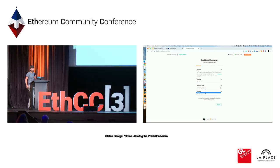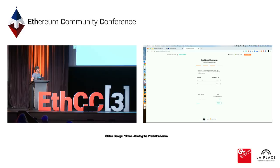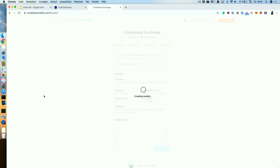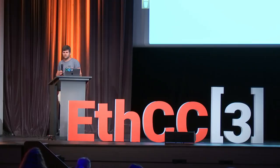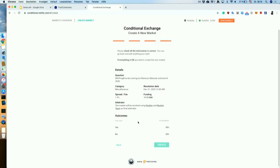Then I can select the collateral token in which the market will be funded, and decide on the funding I contribute to the fixed product market maker — in this case I'll add 10 DAI. There are two outcomes, which can stay as is. I click Create, and the prediction market is created. This entails creating the question on RealityIO, creating the conditional tokens, creating the fixed product market maker, and funding the fixed product market maker with DAI — all in one transaction.